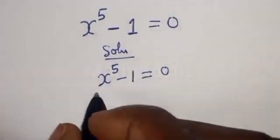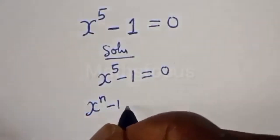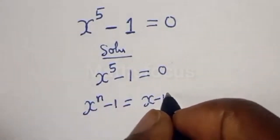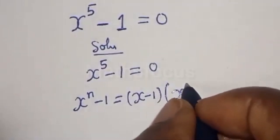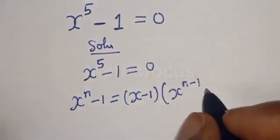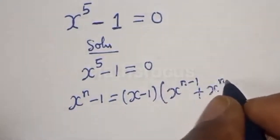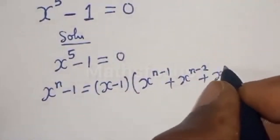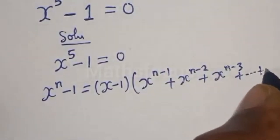Now take note that if you have x raised to the power n minus 1, this is equal to x minus 1 bracket x raised to the power n minus 1 plus x raised to the power n minus 2 plus x raised to the power n minus 3, plus ... plus 1.